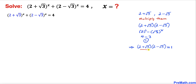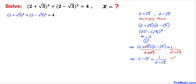Now let's divide both sides by (2 plus square root of 3). The (2 plus square root of 3) terms cancel, and we conclude that 2 minus square root of 3 equals 1 divided by (2 plus square root of 3). We'll use this result going forward.